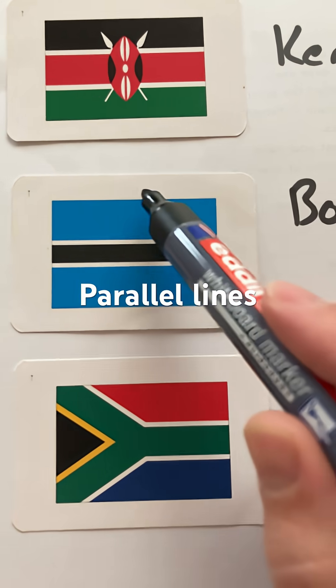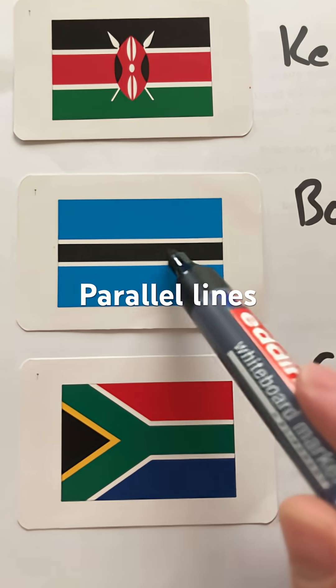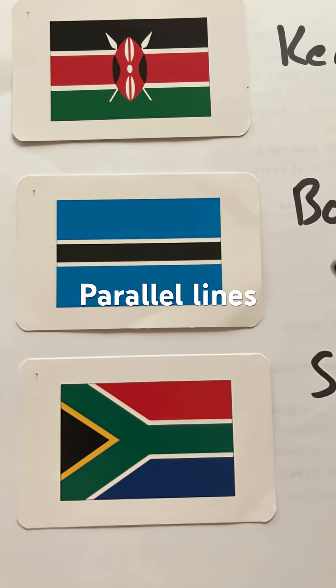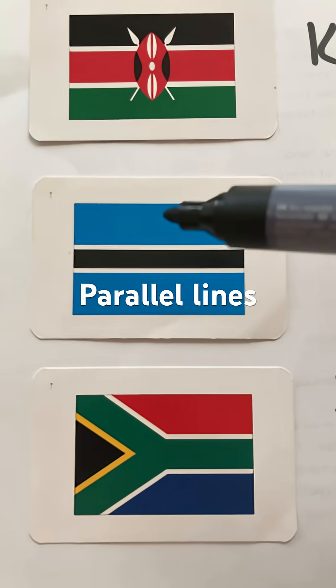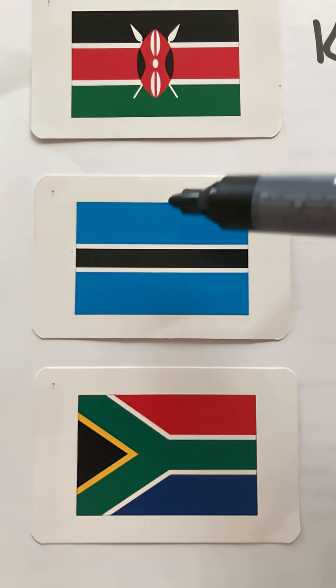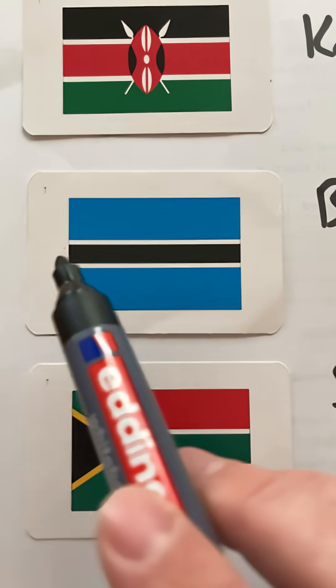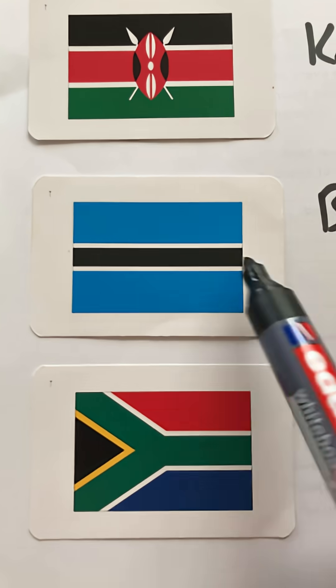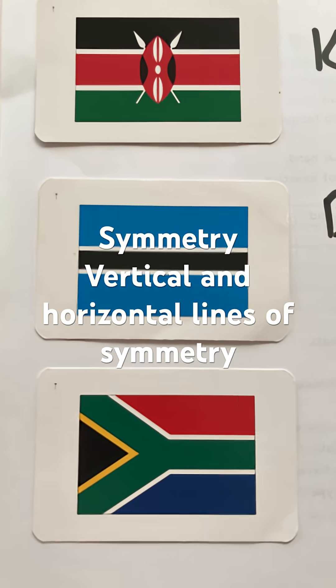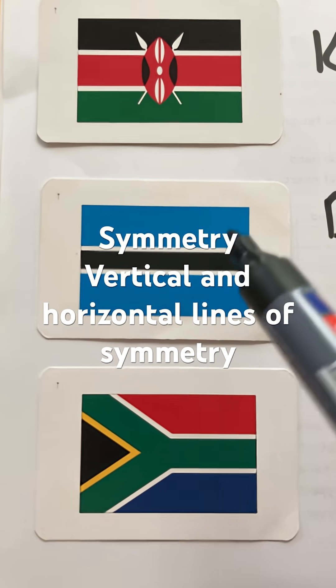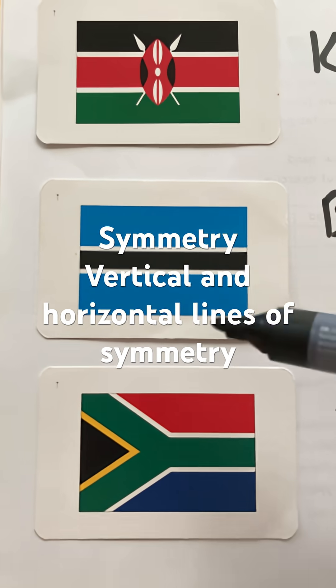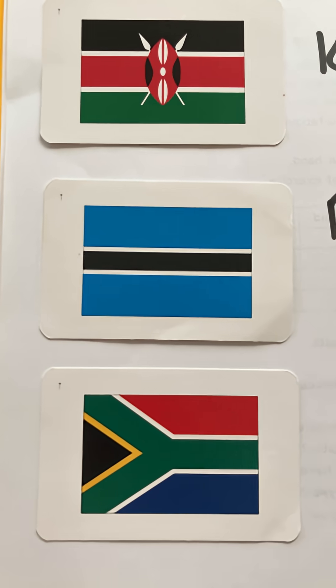And lots of parallel lines. This would then have both a vertical and horizontal line of symmetry, because I could fold it that way or that way and get the same shape.